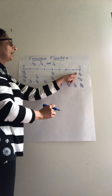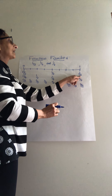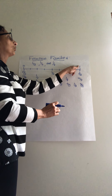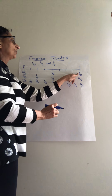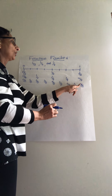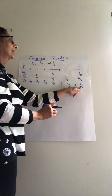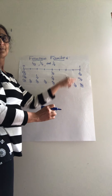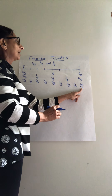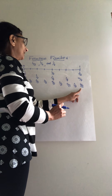If you notice, when the numerator and denominator are the same number, it equals one whole. You can see two-half, four-fourth, and eight-eighth — they are all one whole because the numerator and denominator are the same number.